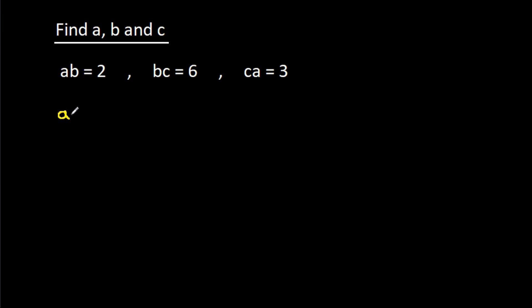So if we multiply AB, BC, and CA, then AB is 2 times BC is 6 times CA is 3.